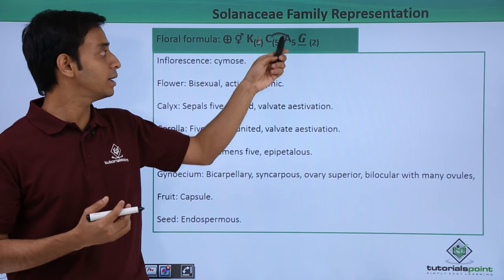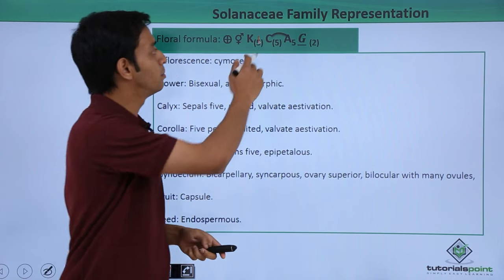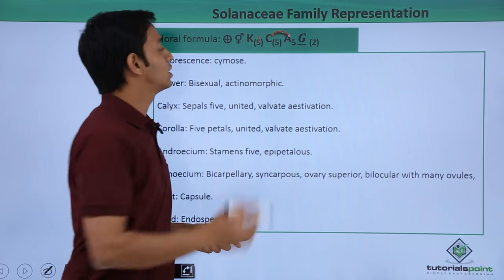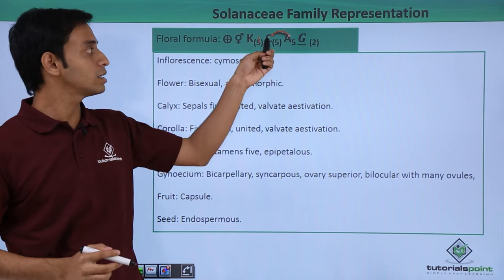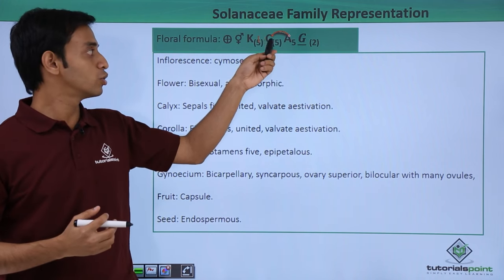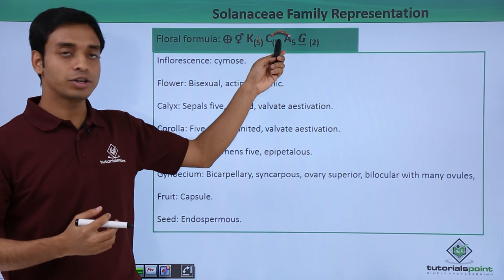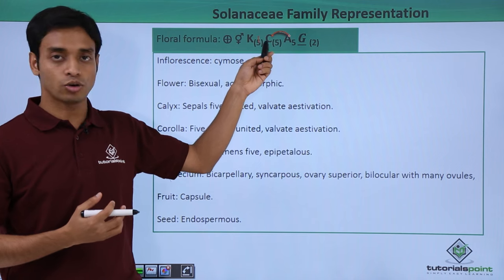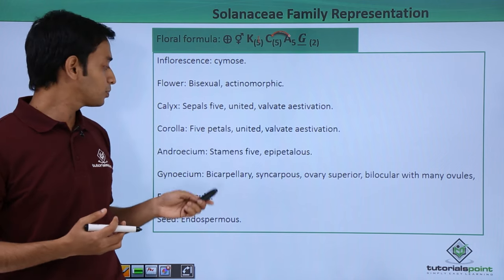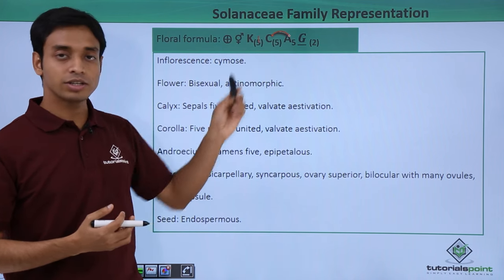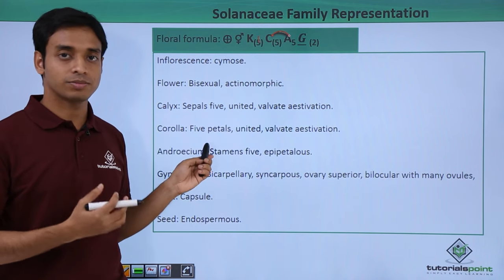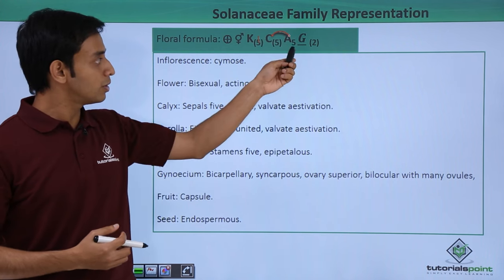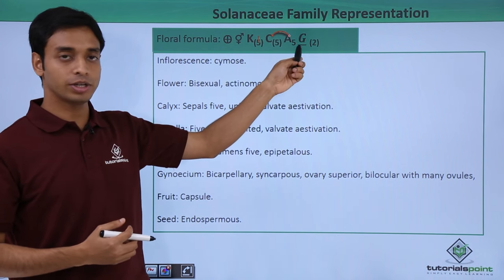The fusion or association is shown by a line connecting C and A in the symbol. This symbol is known as the adnation symbol, which shows that the androecium is in association with the corolla. There are five such stamens.